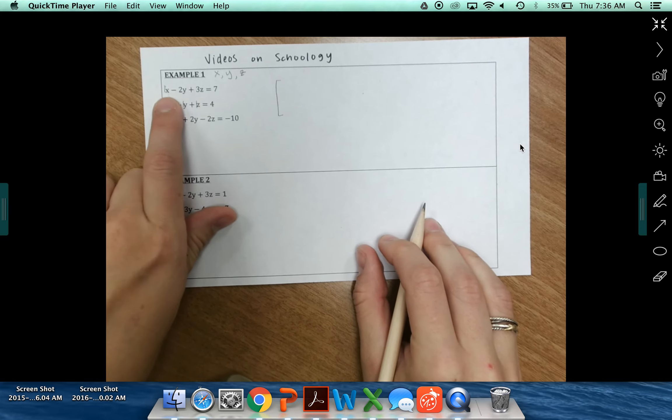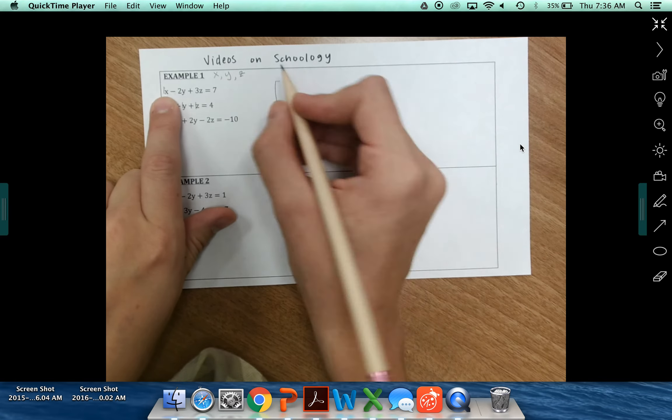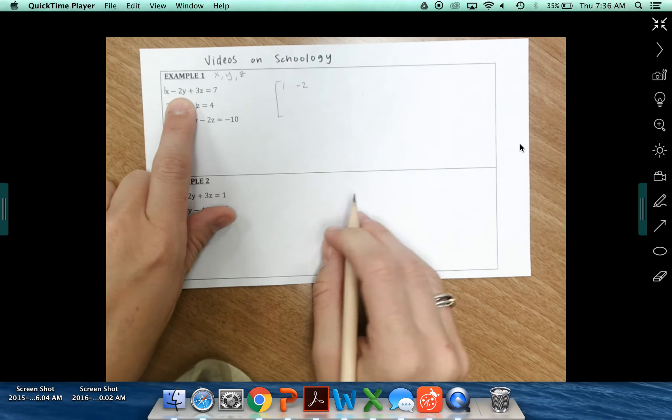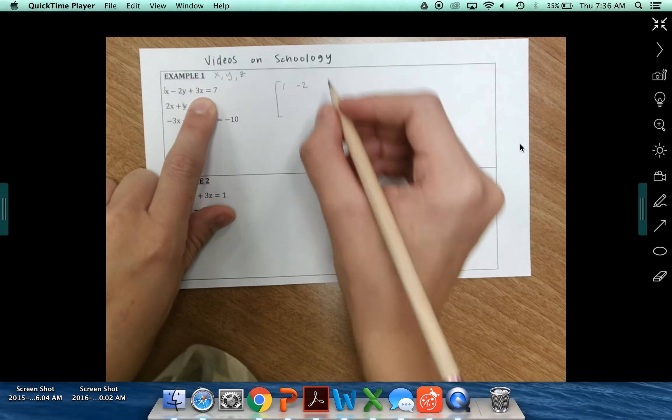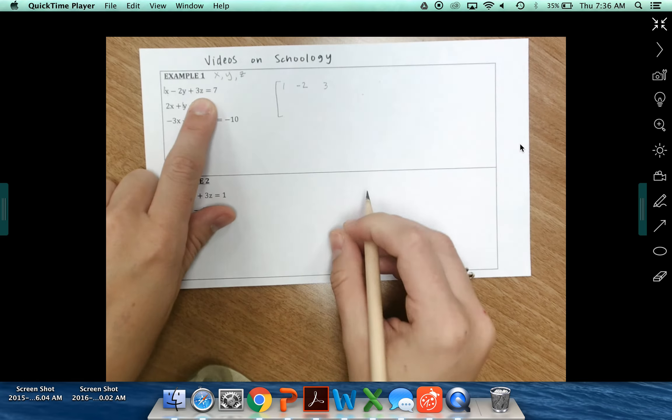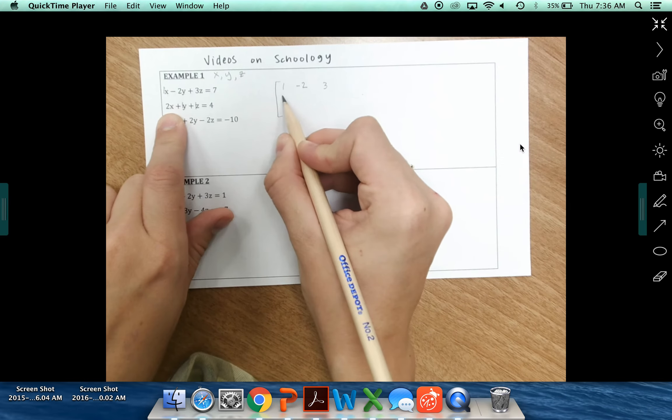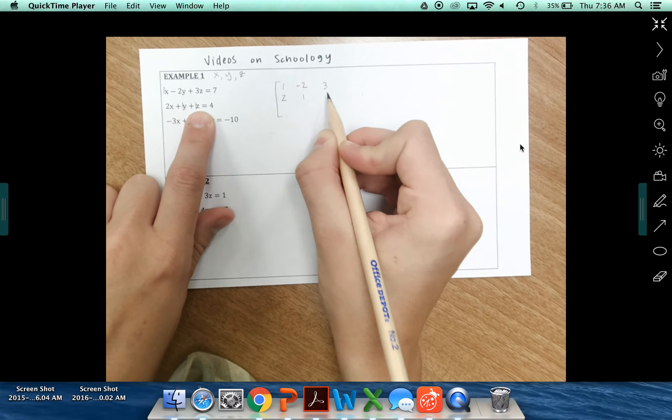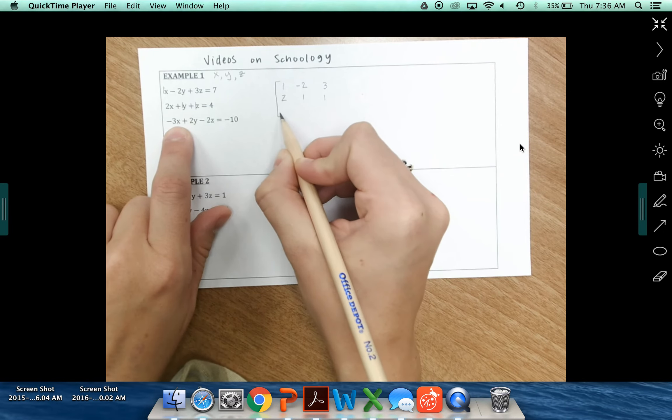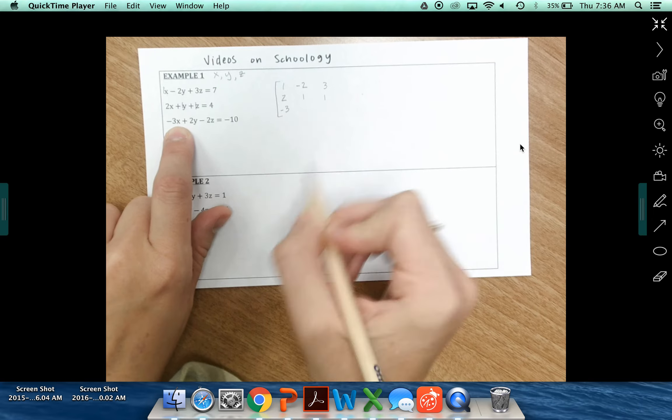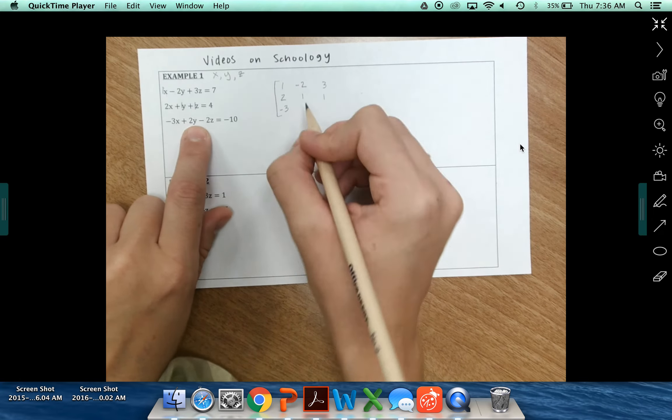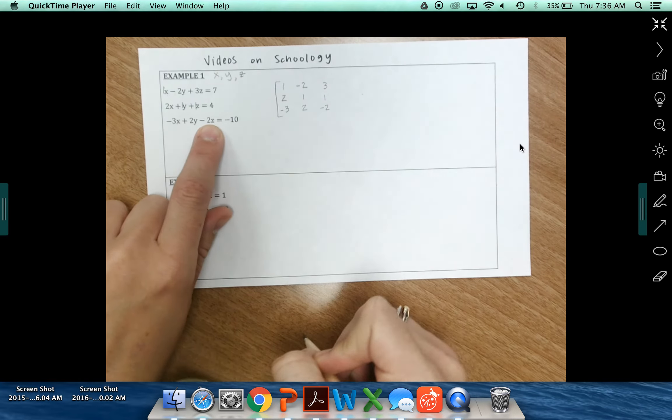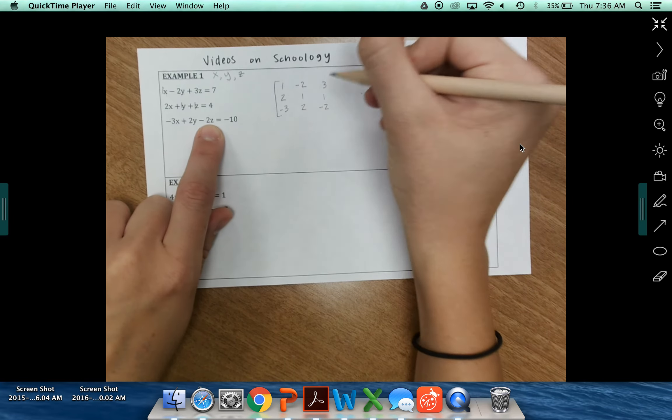The coefficient of my first X term is one. Coefficient of Y is negative two. Coefficient of Z is three. Next equation, coefficient of X is two. Coefficient of Y is one. Coefficient of Z is one. And in the last equation, that first coefficient of X is negative three. Coefficient of Y is two. Coefficient of Z is negative two. So I've got my matrix here.